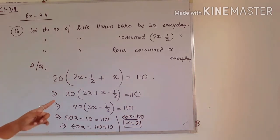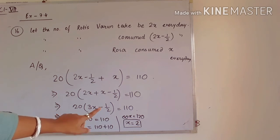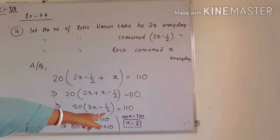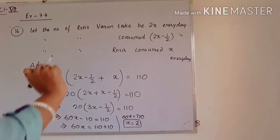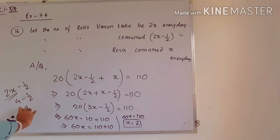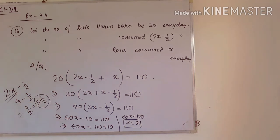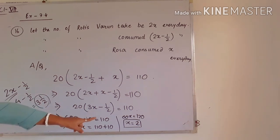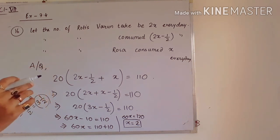Rosa consumed x rotis every day, so x equals 2 means Rosa consumed 2 rotis every day. To find the number of rotis Varun takes: 2 into x equals 2 into 2 equals 4. How much did Varun consume? That is 2x minus 1 by 2, which is 4 minus 1 by 2, giving 7 by 2, or 3 and a half rotis every day. So Varun consumed 3 and a half rotis every day, and Rosa consumed 2 rotis every day.